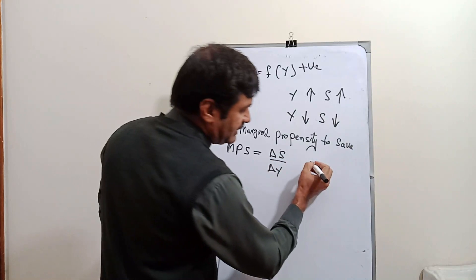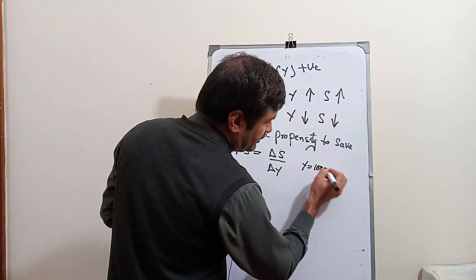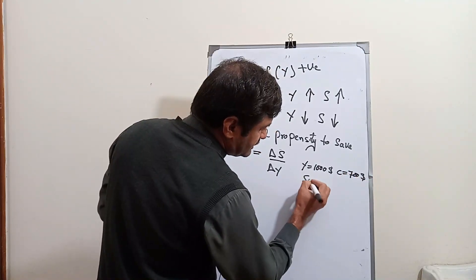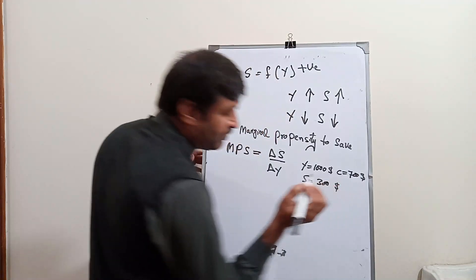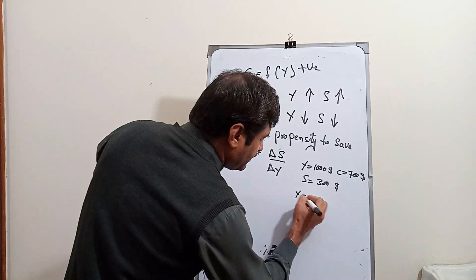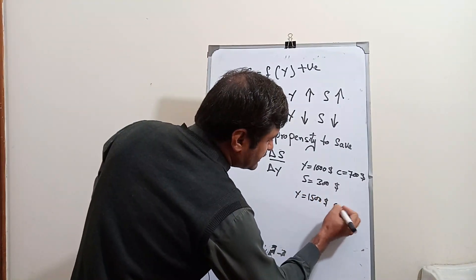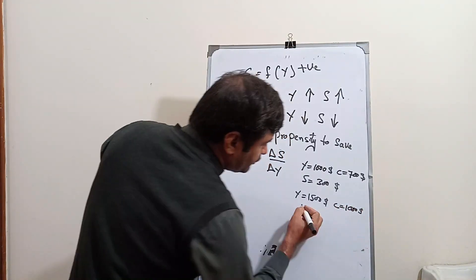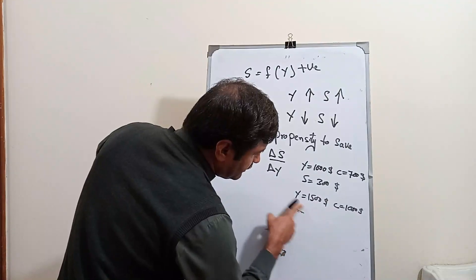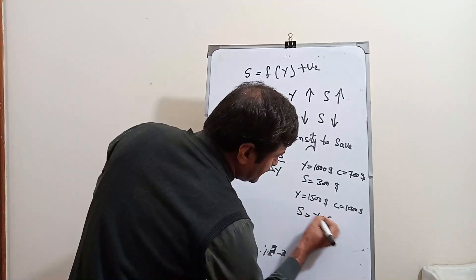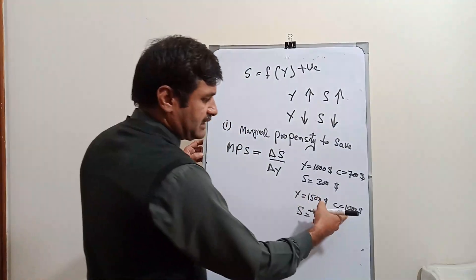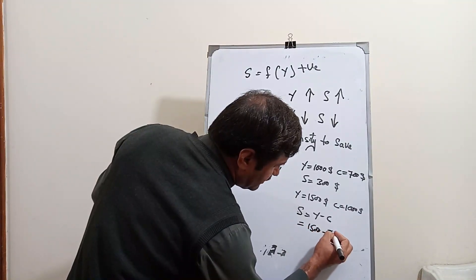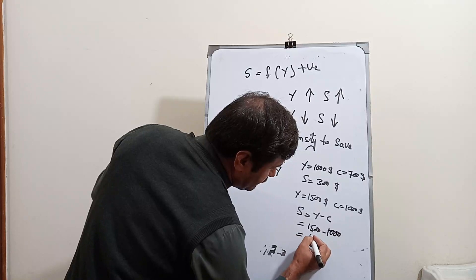Suppose that if our income is equal to $1,000 and consumption is equal to $700, then saving is equal to $300. Now our income increases from $1,000 to $1,500, and consumption increases from $700 to $1,000. So saving equals income minus consumption: $1,500 minus $1,000 equals $500.